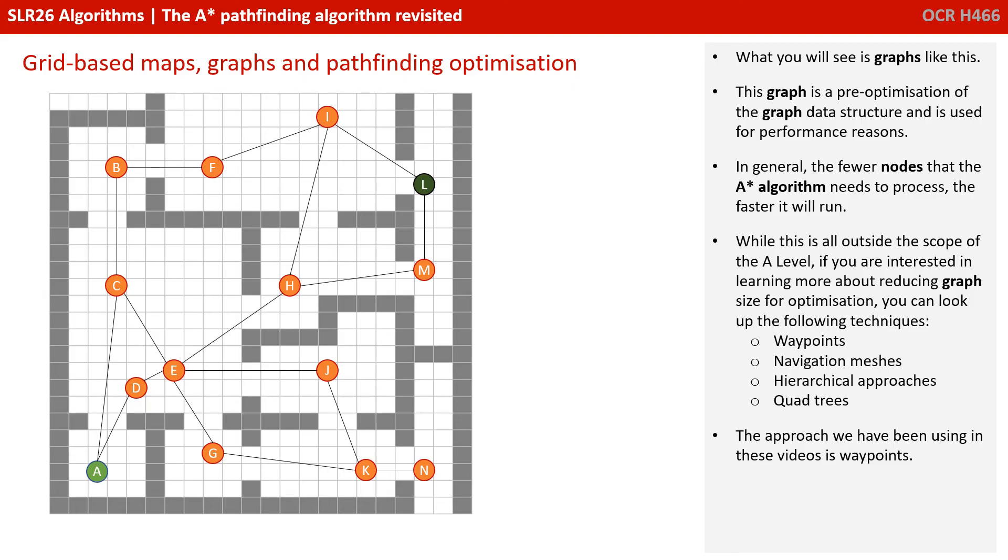So while this is all outside the scope of the A-level, if you're interested in learning more about reducing graph size for optimization, you could look up techniques such as waypoints, navigation meshes, hierarchical approaches and quadtrees. Incidentally, the approach that we've been using in this video is that of waypoints.